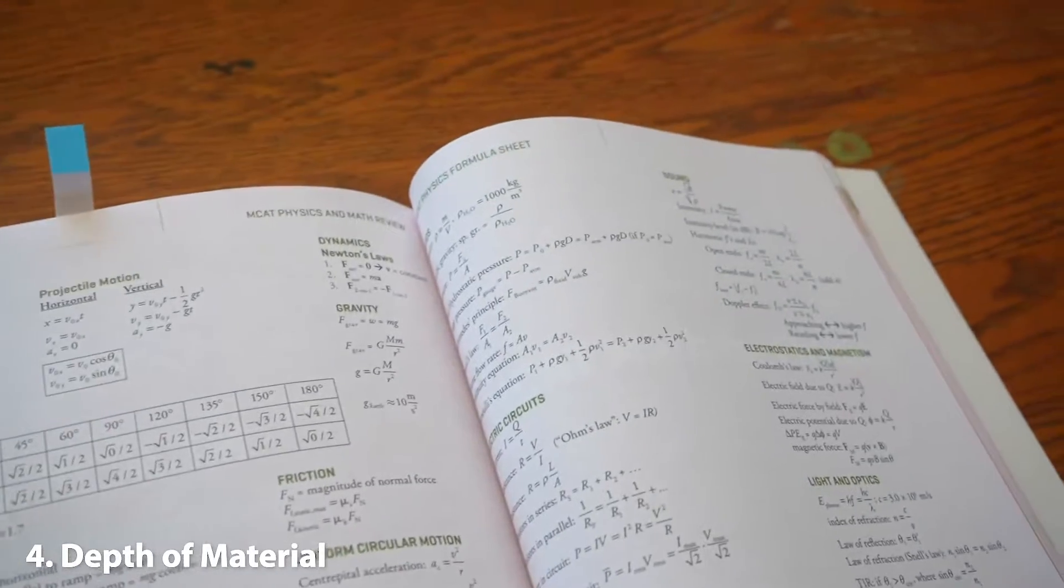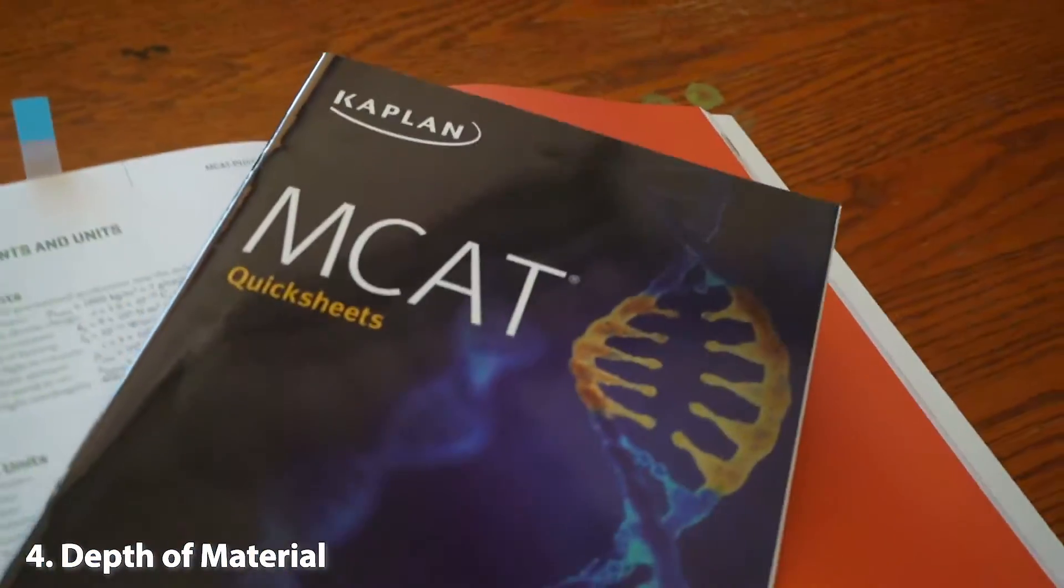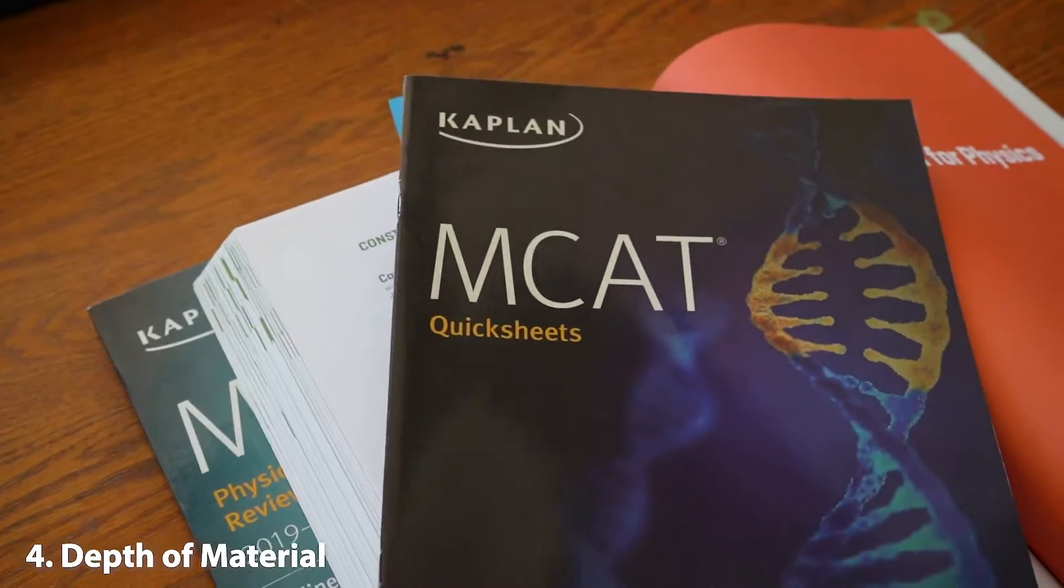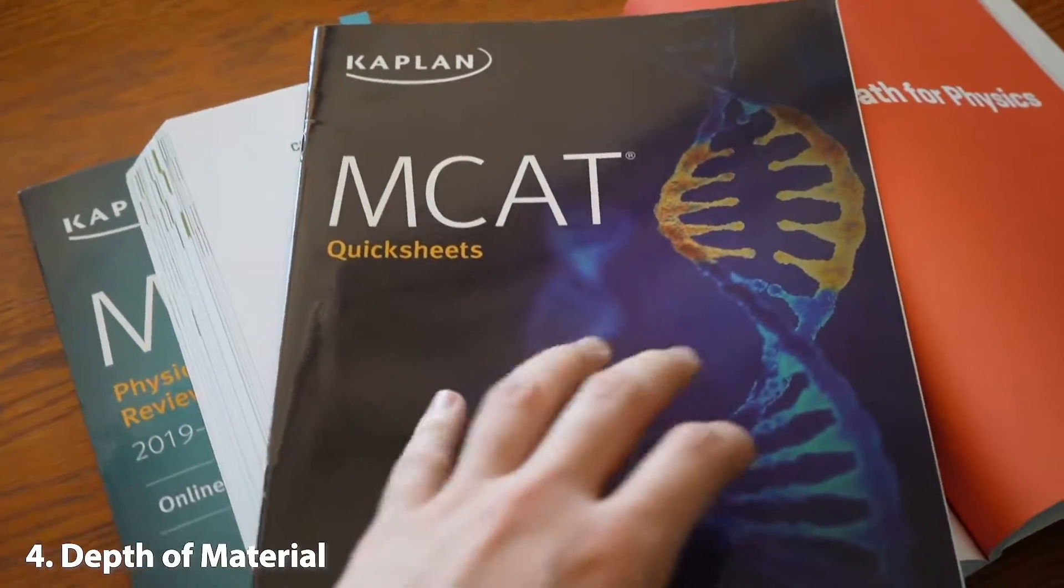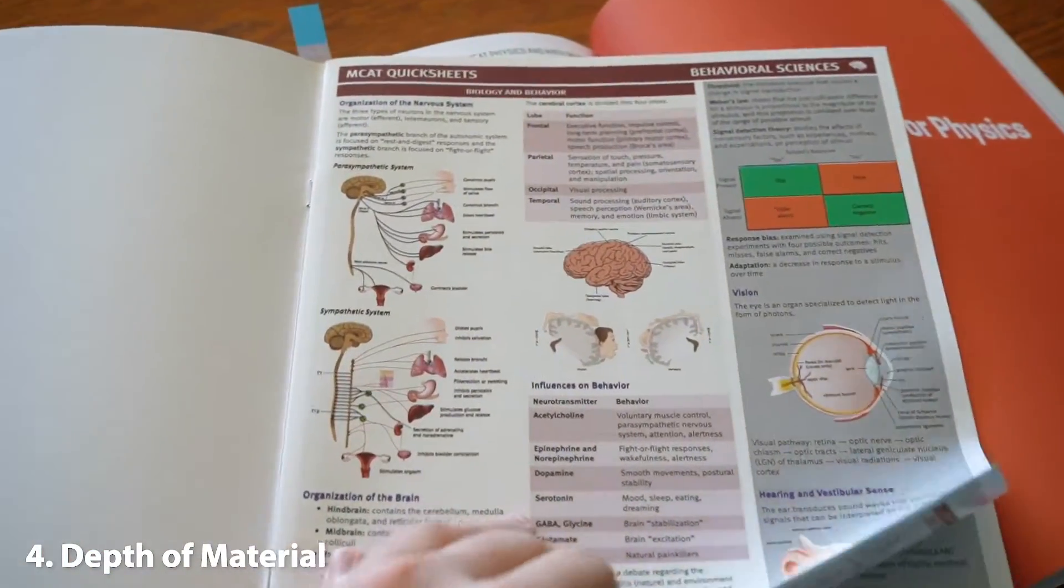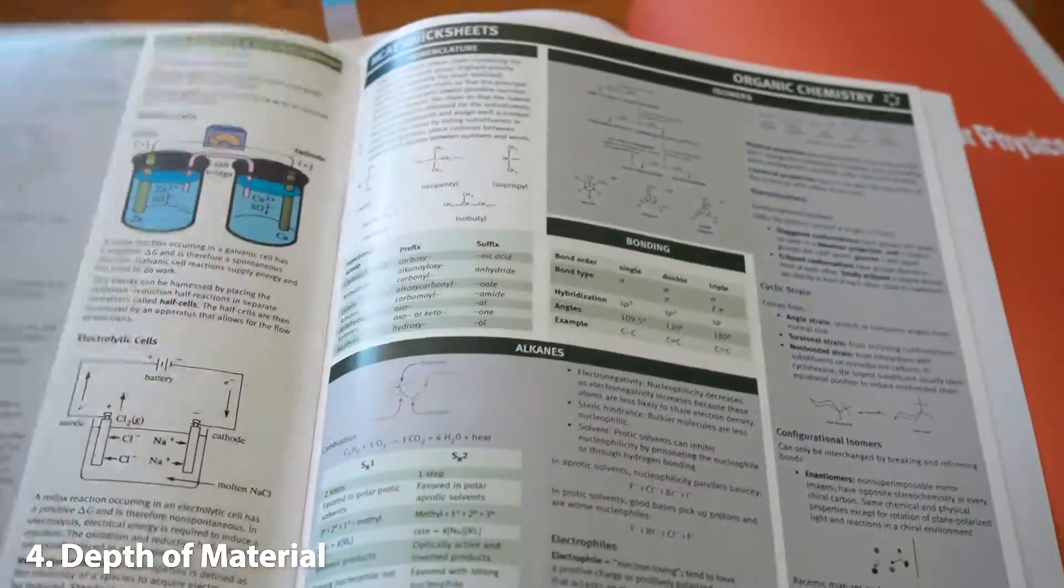For Kaplan, we also have a spot where everything is in one space. But it's in another little booklet they give you. It's called Quick Sheets. And pretty much this has a summary of all the chapters, starting with Behavioral Science. And at the end, you're going to find Physics and Math.